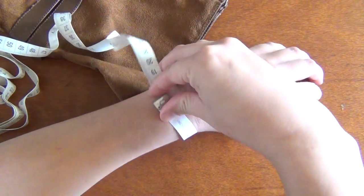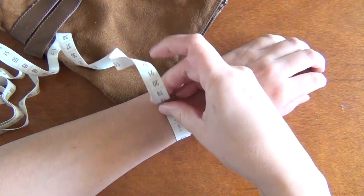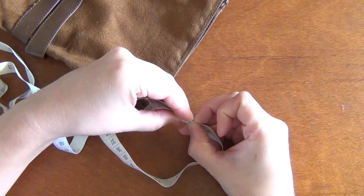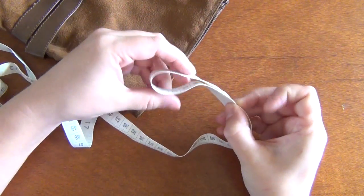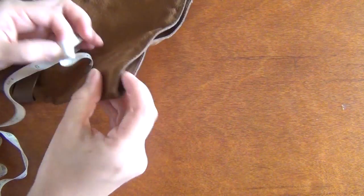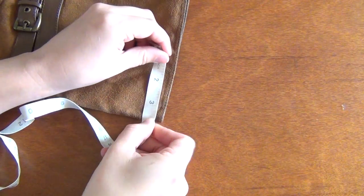Then add one inch to that measurement and fold it over so that the tip of the measuring tape is at that measurement. Then find the middle of that bow and line that up with the middle of your folded over piece of fabric.